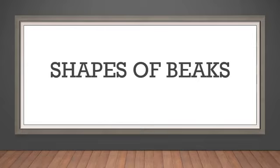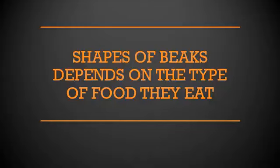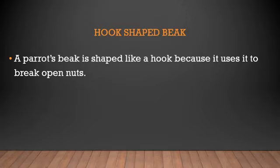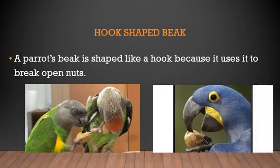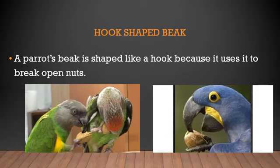Now you are going to learn about different shapes of beaks, which birds have those beaks, and what kind of food they eat. Shapes of the beak depend on the type of food they eat. The first is the hook-shaped beak. A parrot's beak is shaped like a hook because it uses its beak to break open nuts. In the picture you can see the parrot using its beak to break open nuts.